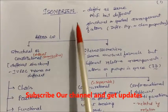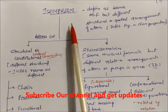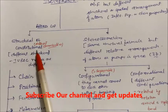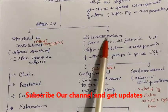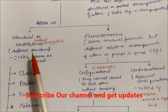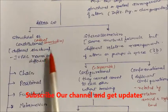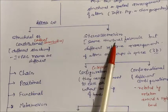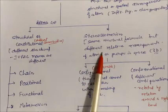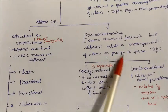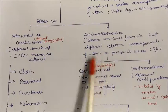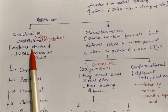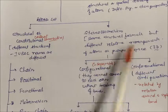Isomerism is broadly defined into two types. One is structural or constitutional isomerism, and the second is stereoisomerism. Constitutional isomers have different connectivities, while stereoisomers have the same structural formula but their atoms have different relative arrangements in space — different arrangement of atoms or groups in space.